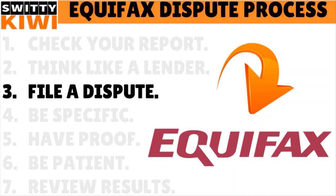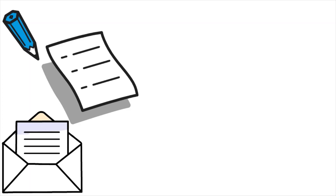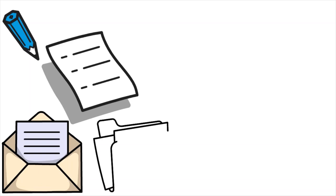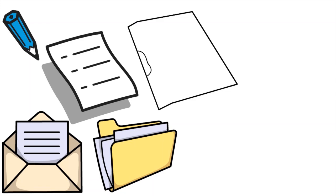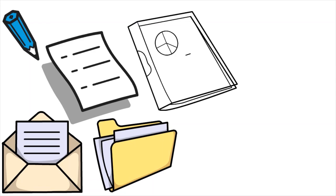Step number three: after you check your report and start thinking like a lender, you want to file a dispute. You can file a dispute for free. If you see information on your Equifax credit report that you believe is inaccurate or incomplete, simply file a dispute and Equifax will look into things right away. If you submit a dispute to one of the three nationwide credit bureaus — Equifax, Experian, and TransUnion — they may update your credit report based on the documents and information you provide. For example, submitting a marriage certificate for a name change will work.